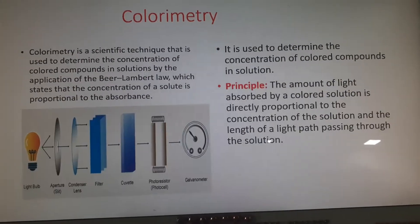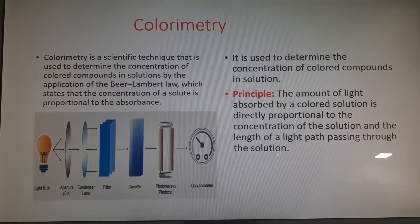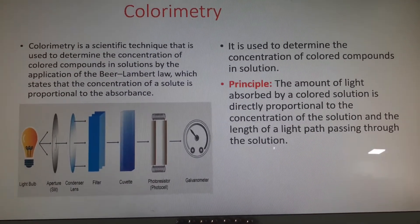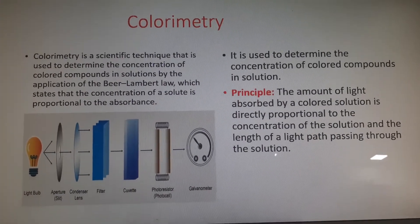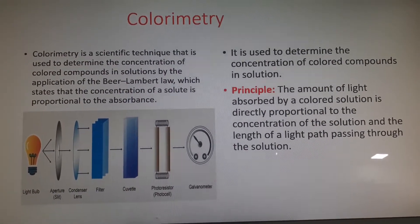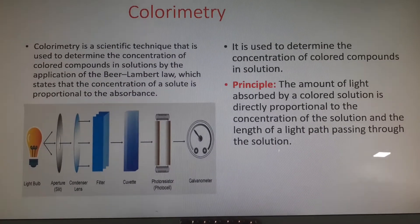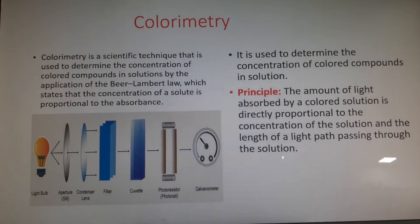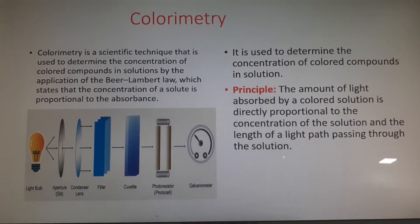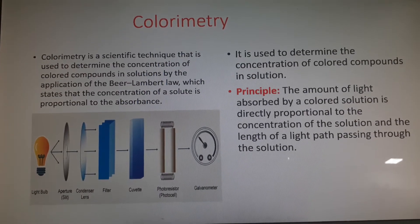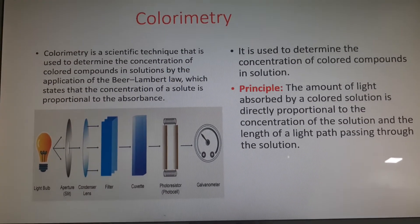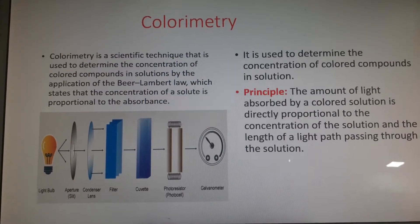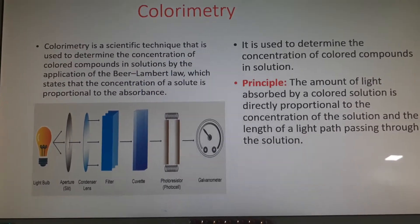The first instrument is called a colorimeter. A colorimeter is a scientific technique used to determine the concentration of colored compounds in solution by the application of Beer-Lambert's law, which states that the concentration of the solute is proportional to the absorbance. The special feature of the colorimeter is that it is used only to determine the concentration of colored compounds in solutions.